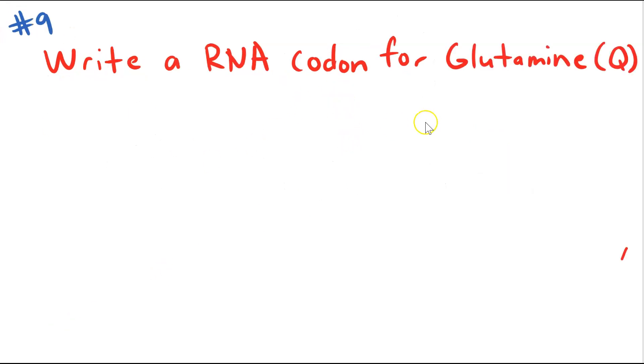Number nine asks you to write an RNA codon for glutamine. So again, this is basically a one step backwards. So you find glutamine, single letter abbreviation Q, and your RNA in this case for glutamine could be CAA, or it could be CAG. So that answers that one.